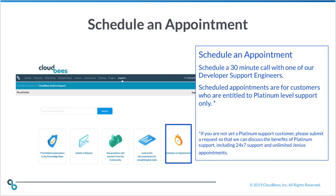Last, but certainly not least, CloudBees offers our Platinum-level support customers scheduled 30-minute calls with one of our developer support engineers. If you are not yet a Platinum support customer, please submit a request so that we can discuss the benefits of Platinum support, including 24-7 support and unlimited genius appointments.